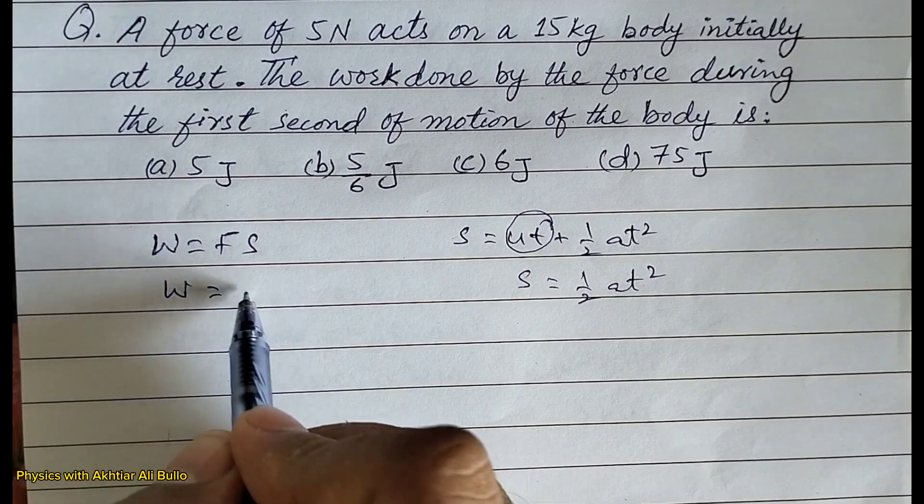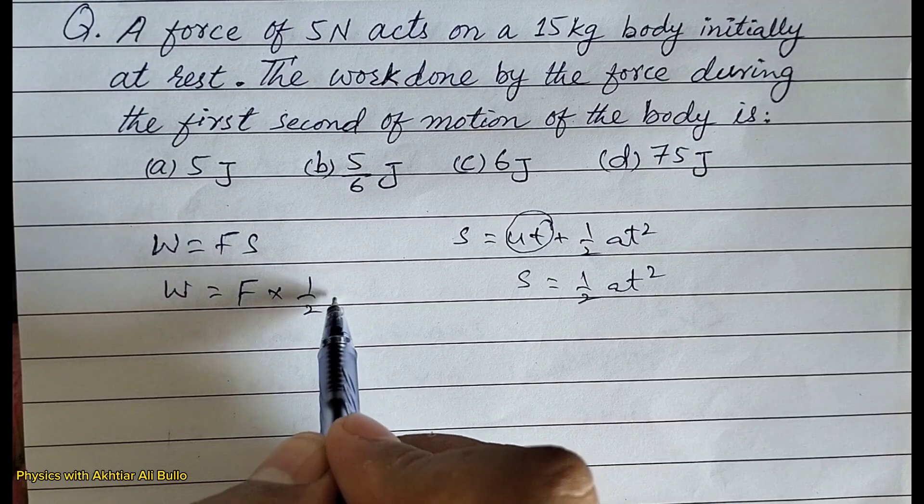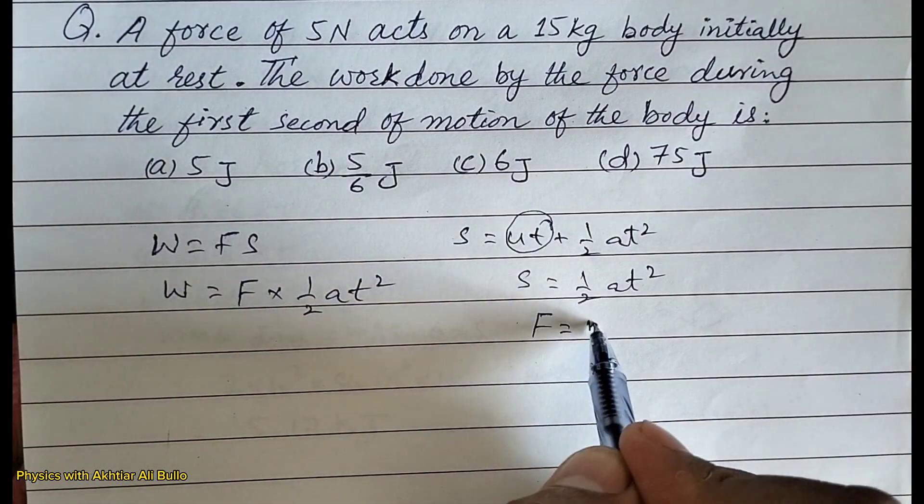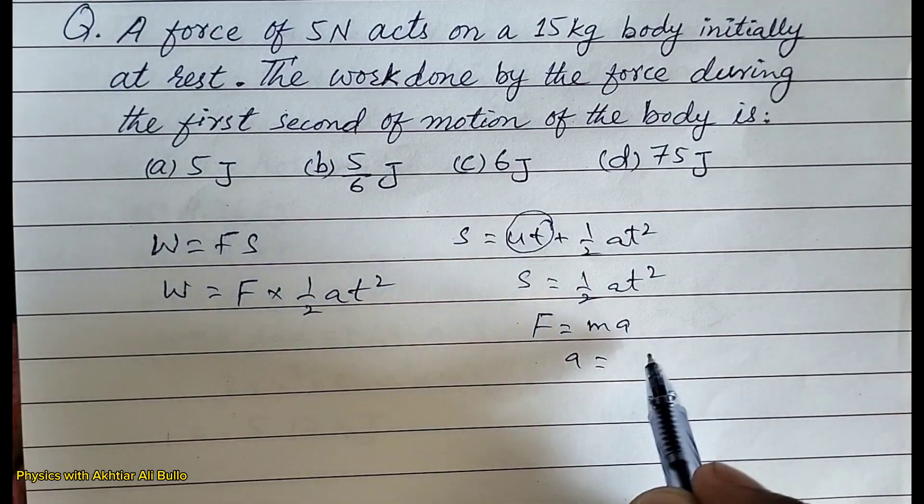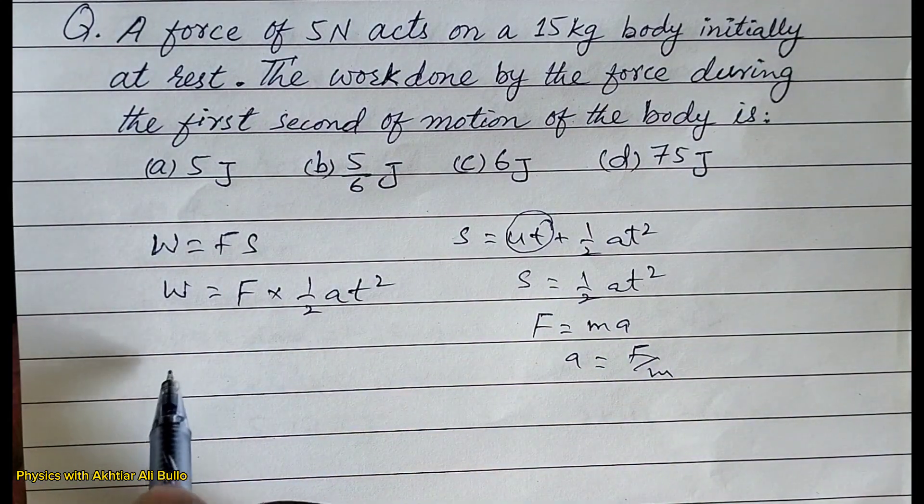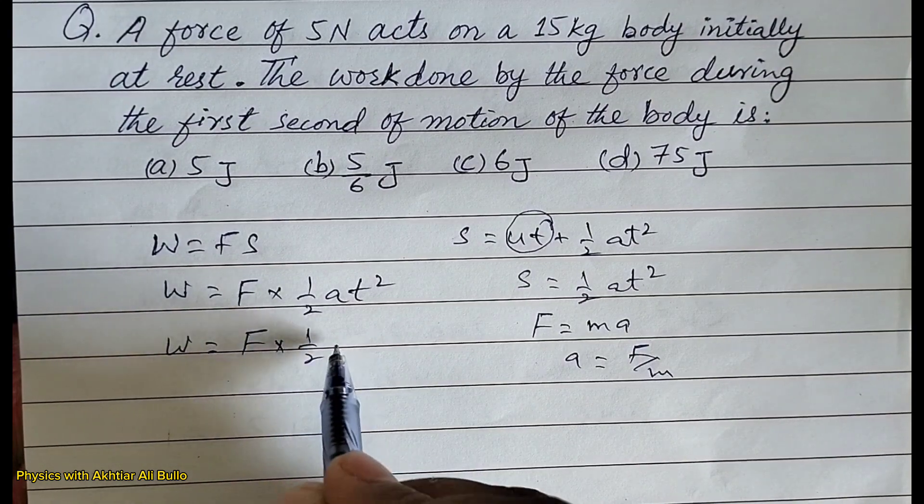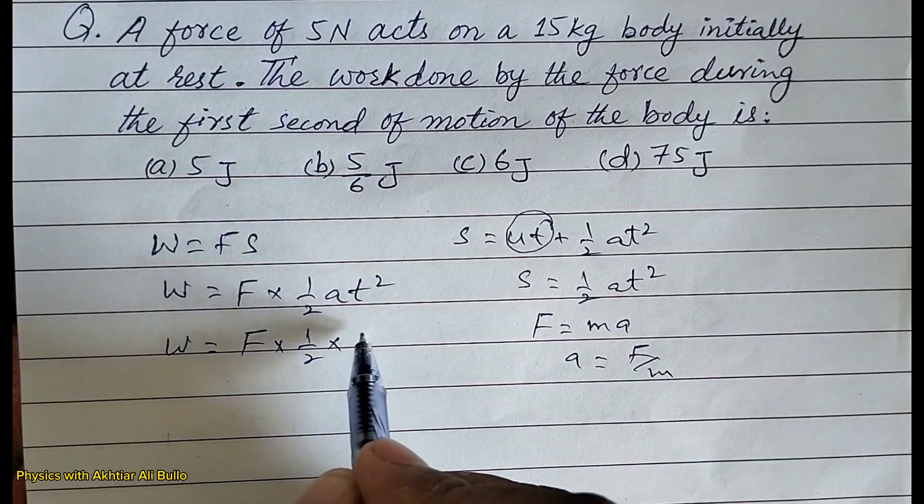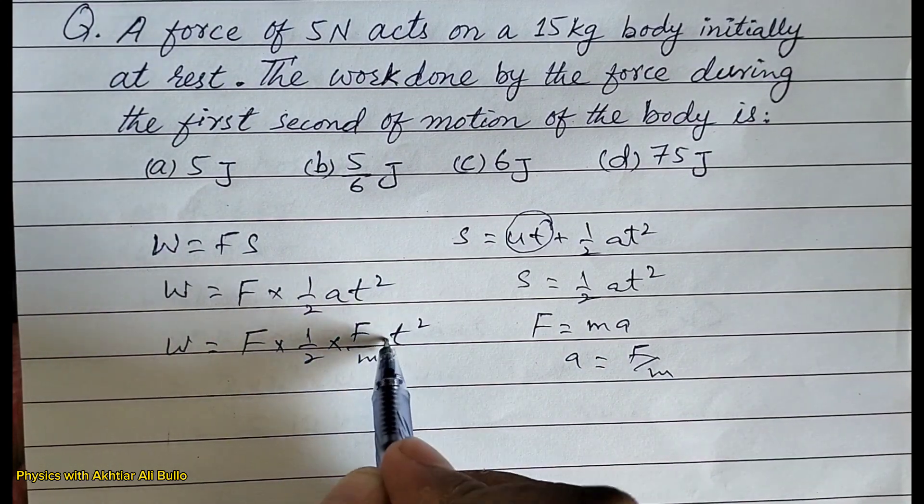So work done will be equal to force into 1/2 at squared. Force is equal to mass into acceleration, so acceleration will be equal to force upon mass. So work done will be equal to force into 1/2 into the value of acceleration, which is f upon m into t squared.